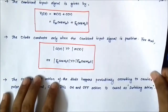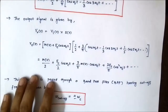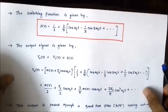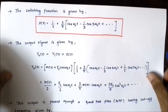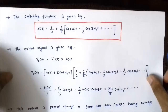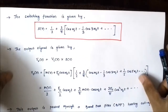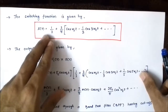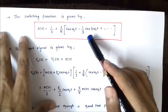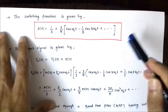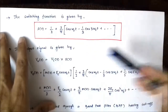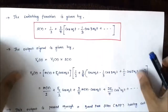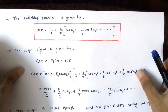Two important things to remember: the net input signal controls the on and off action, and the diode conducts only when the magnitude of the carrier signal is greater than that of the message signal. The on and off action of the diode can be described with a switching function S(t), which is a Fourier series expansion given by: S(t) = 1/2 + (2/π)[cos(ωc·t) − (1/3)cos(3ωc·t) + (1/5)cos(5ωc·t) − (1/7)cos(7ωc·t) + ...]. This switching function is controlled by the carrier pulse train and the message signal.